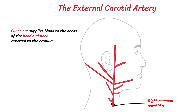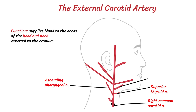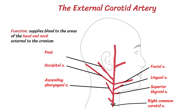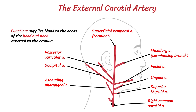The external carotid artery has a number of branches. In ascending order, these are: superior thyroid artery, ascending pharyngeal artery, lingual artery, facial artery, occipital artery, posterior auricular artery, maxillary artery, and superficial temporal artery.